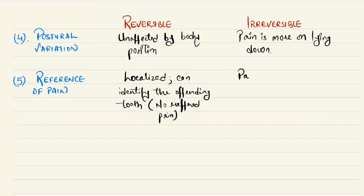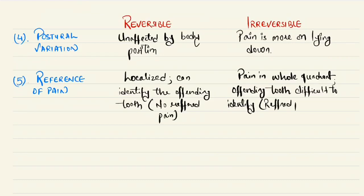The patient can identify the offending tooth and can point on that tooth which is having pain, leading to pain, that is there is no referred pain. While in case of irreversible pulpitis, pain is in the whole quadrant and offending tooth is difficult to identify, and referred pain like ear pain or headache.